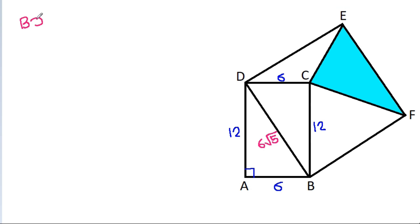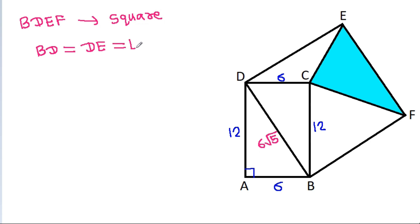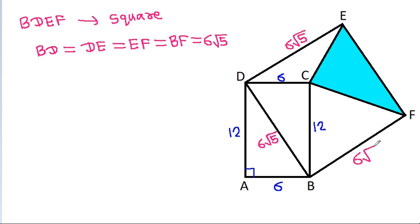BD, EF — it is a square. So BD will be equal to DE, equal to EF, and equal to BF, and all of them are 6√5.